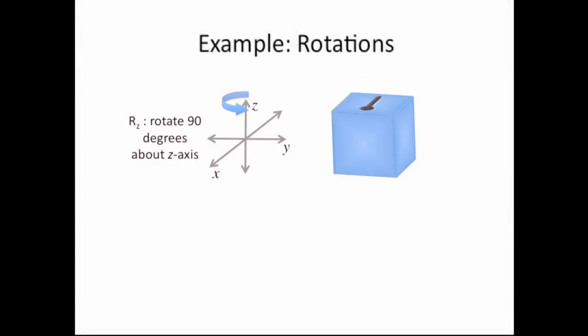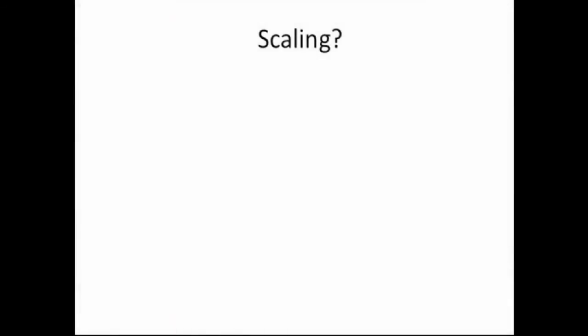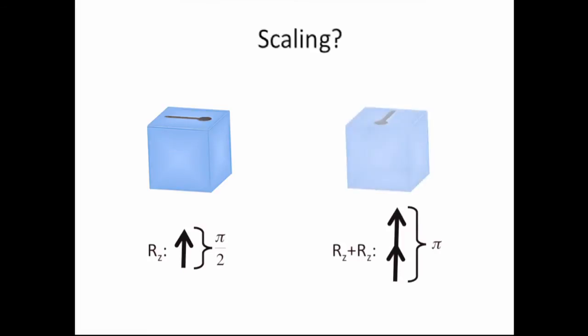Consider the following two rotations. R sub z rotates an object by 90 degrees around the z-axis, which rotates an object as such. R sub y rotates an object by 90 degrees or pi over 2 radians about the y-axis, which rotates the same object in this manner. Do rotations scale like vectors? Let's see what happens if we take the vector that represents the rotation of pi over 2 radians about the z-axis and add it to itself. It seems like it should be a rotation of pi radians or 180 degrees. And this agrees with what we get by rotating 90 degrees around the z-axis twice. So scaling rotations makes sense.